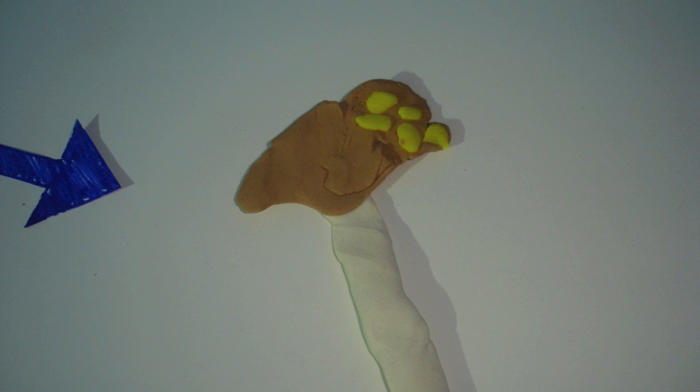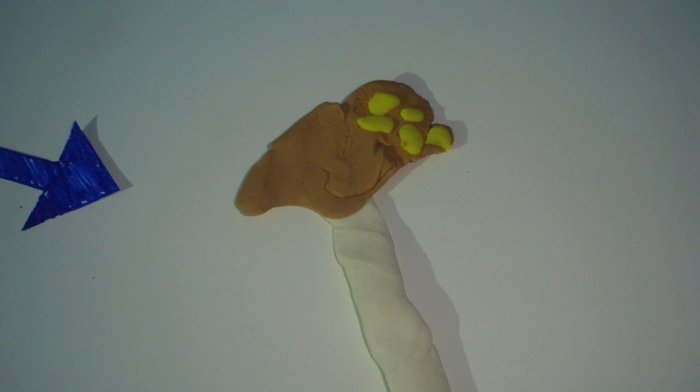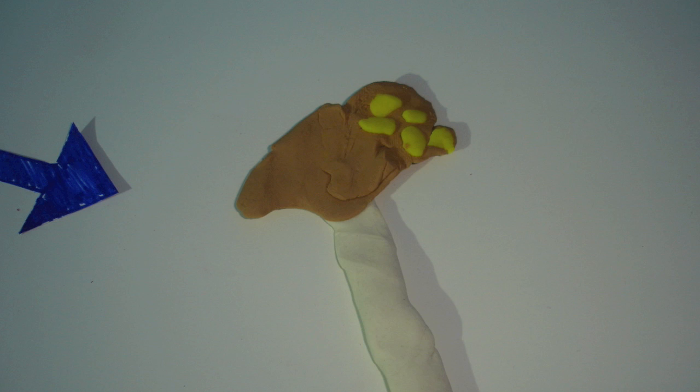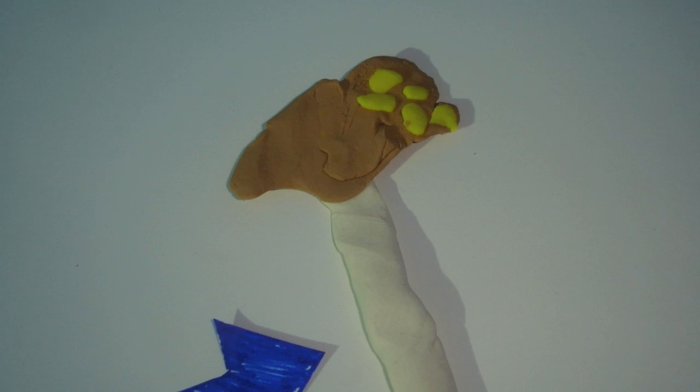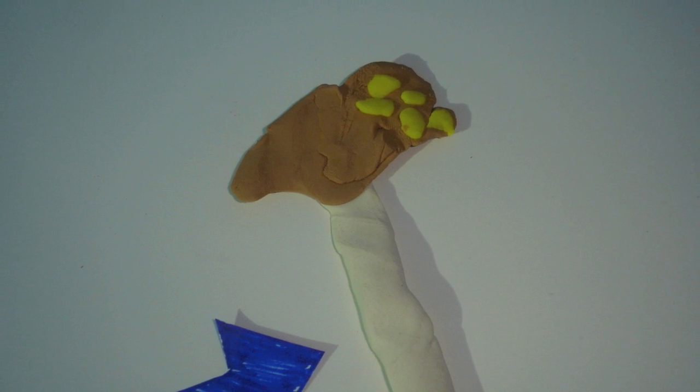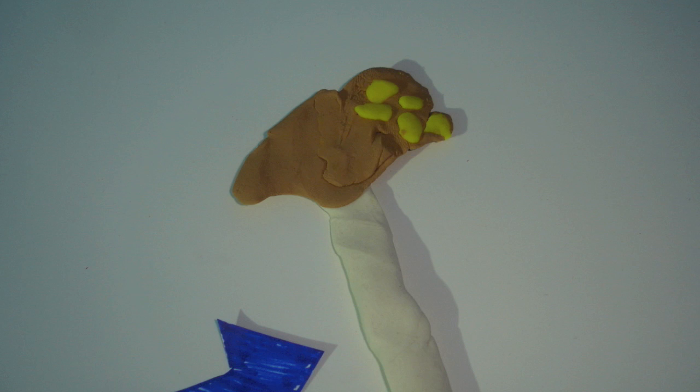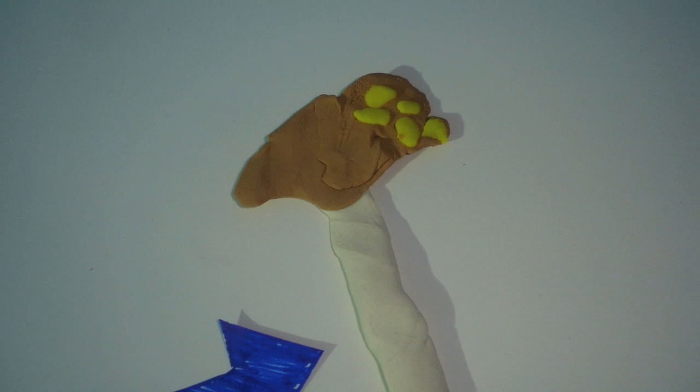This is an enlarged view of the stamen, or the male sexual organ of the flower. This is the filament. The filament is a slender stalk that supports the anther.